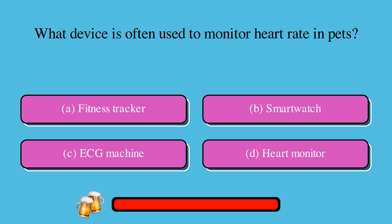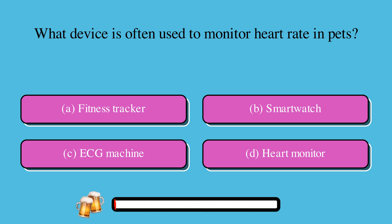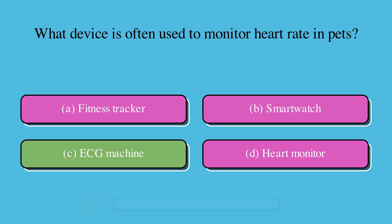What device is often used to monitor heart rate in pets? A. Fitness tracker, B. Smartwatch, C. ECG machine, or D. Heart monitor. The correct answer is C. ECG machine.